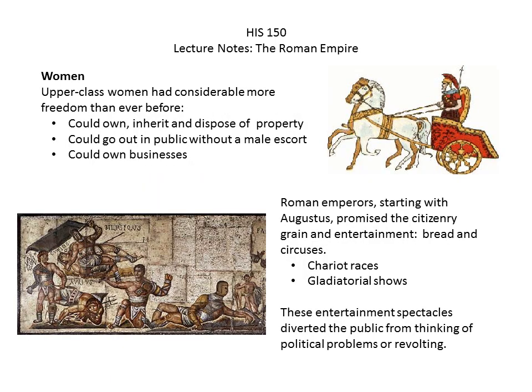Upper class women had more freedom than ever before — they could own, inherit, and dispose of property, go out in public without a male escort, and own their own business. This was very unique and rare. Even today in Saudi Arabia, Somalia, and some more fundamentalist countries, women can't do any of this in 2014.